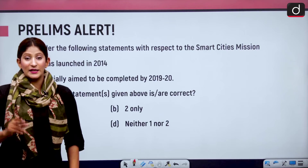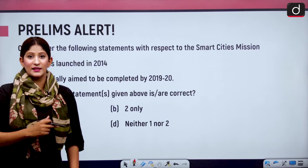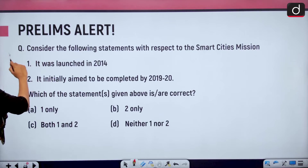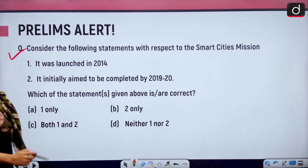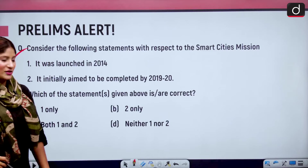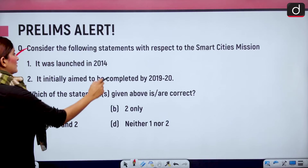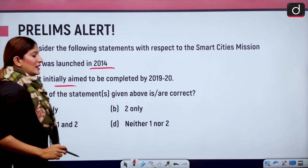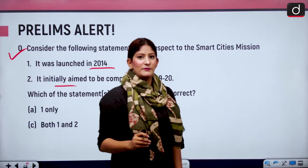For our prelims alert — answer this correctly: Consider the following statements with respect to the Smart Cities Mission: it was launched in the year 2014 and it initially aimed to be completed by 2019–2020. Answer this correctly and I will take the names of those who have answered it correctly.